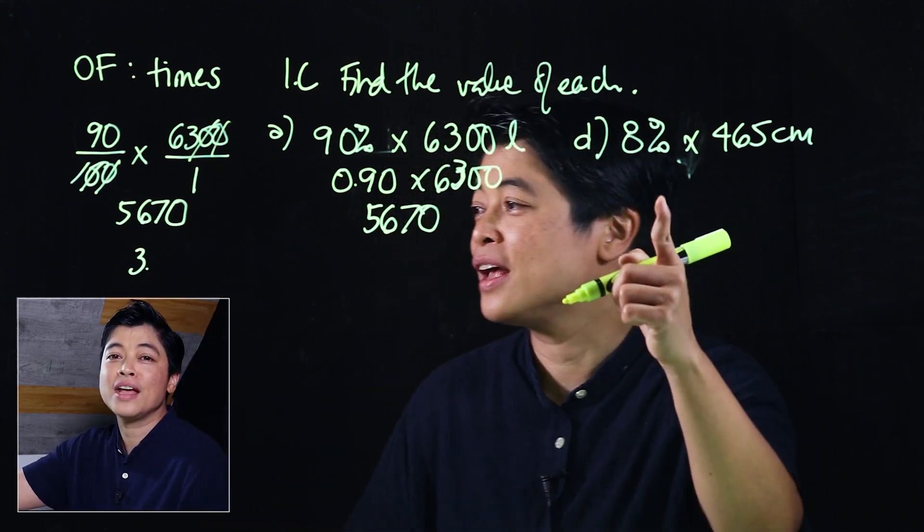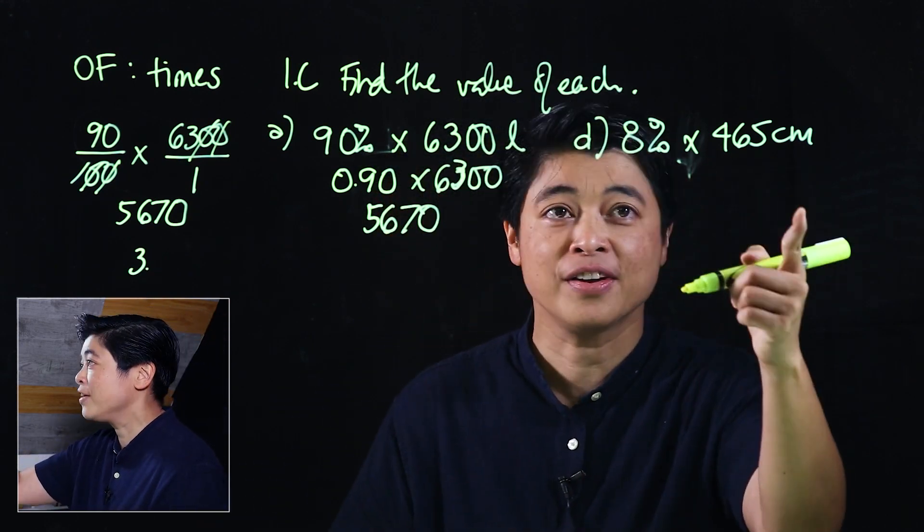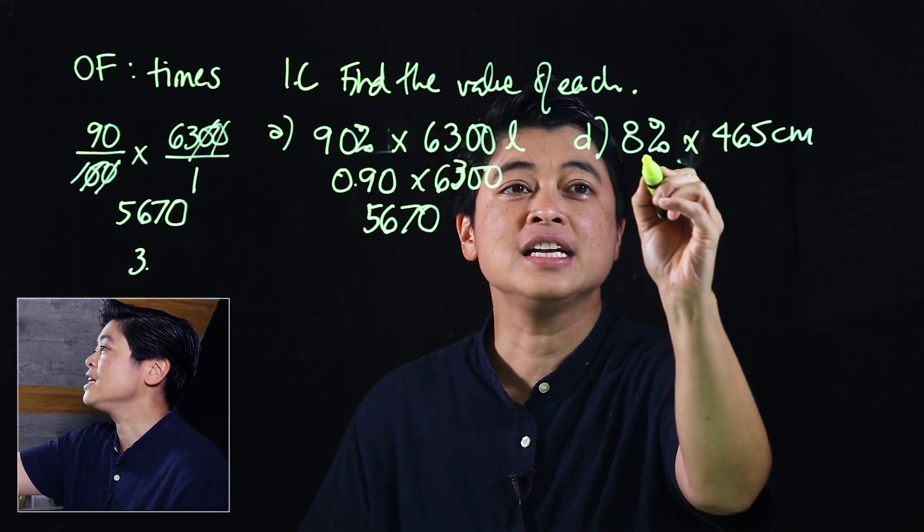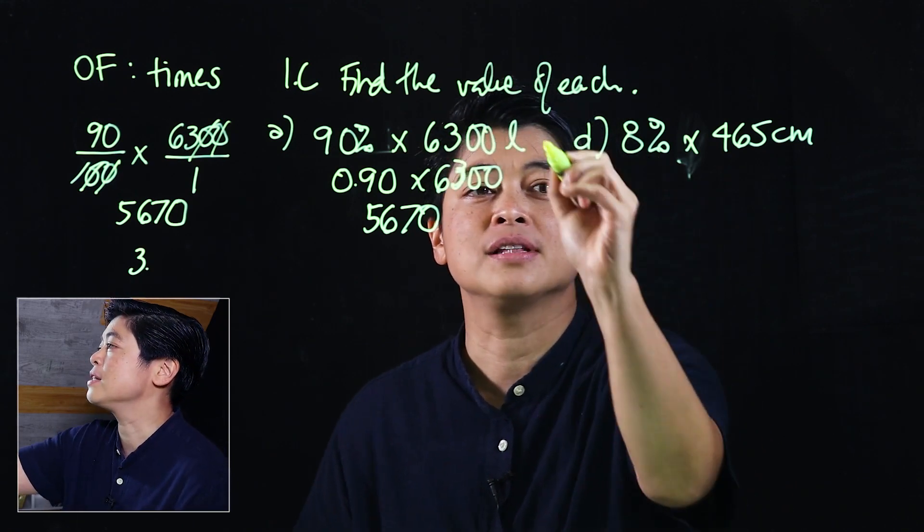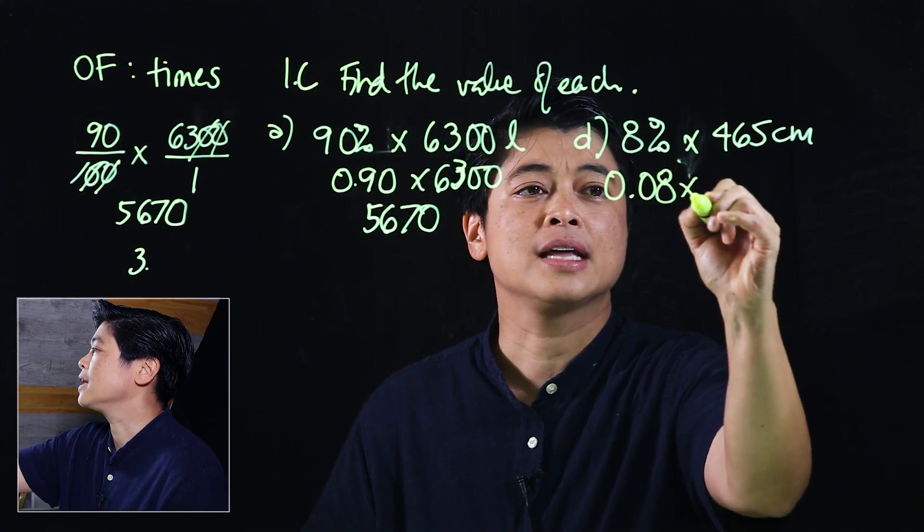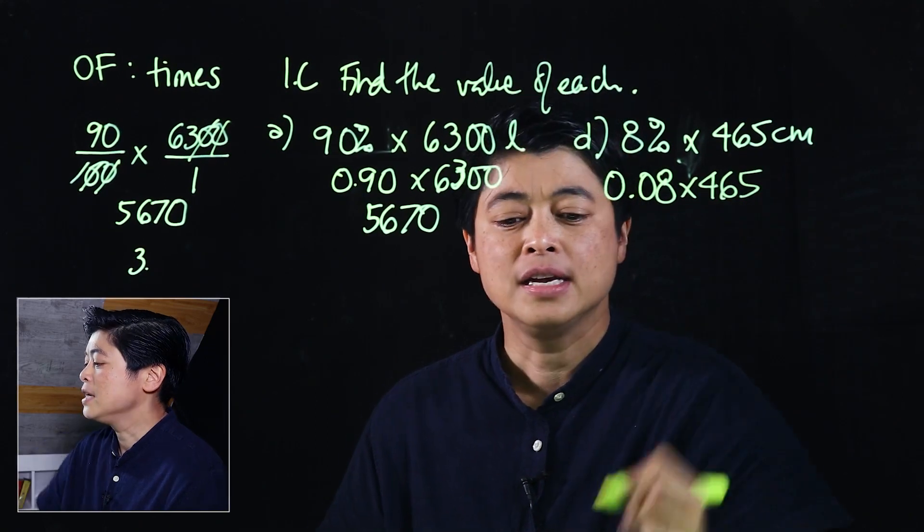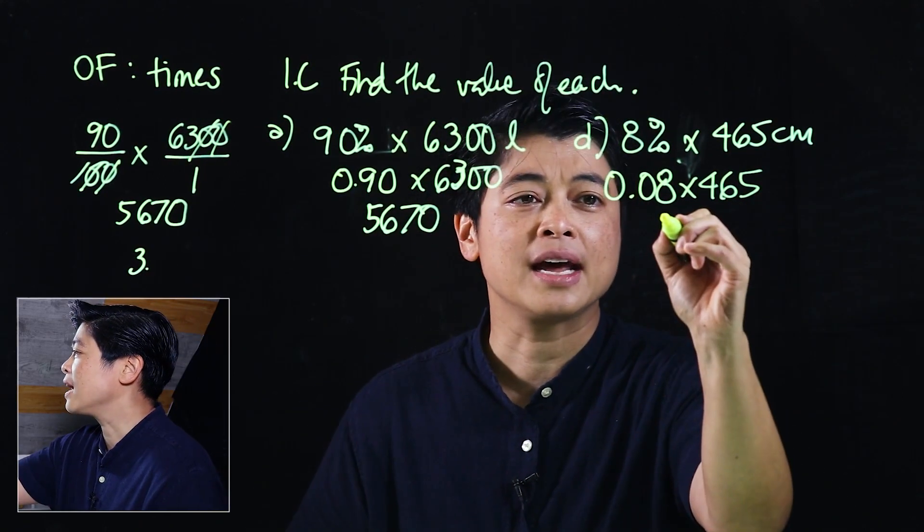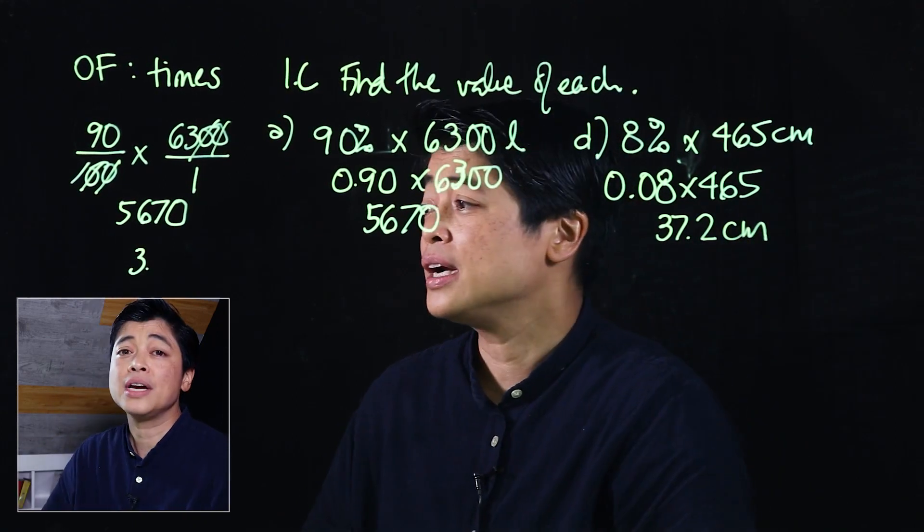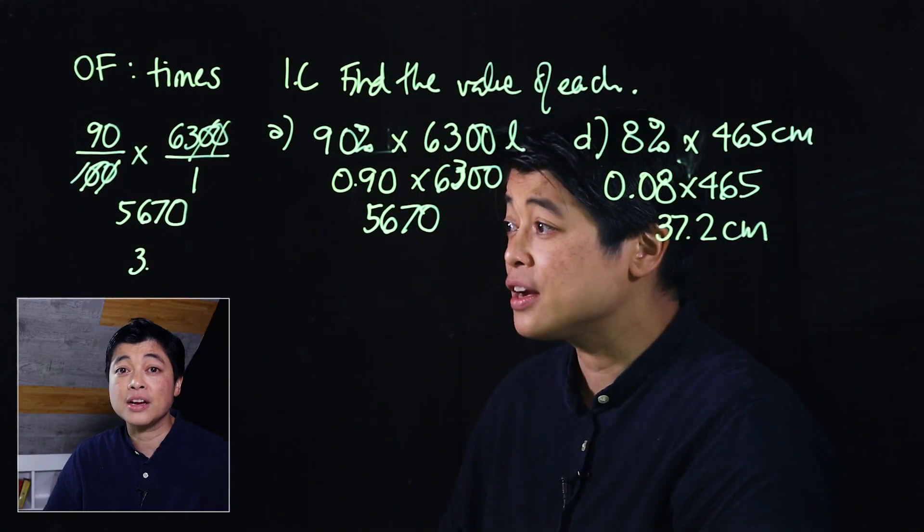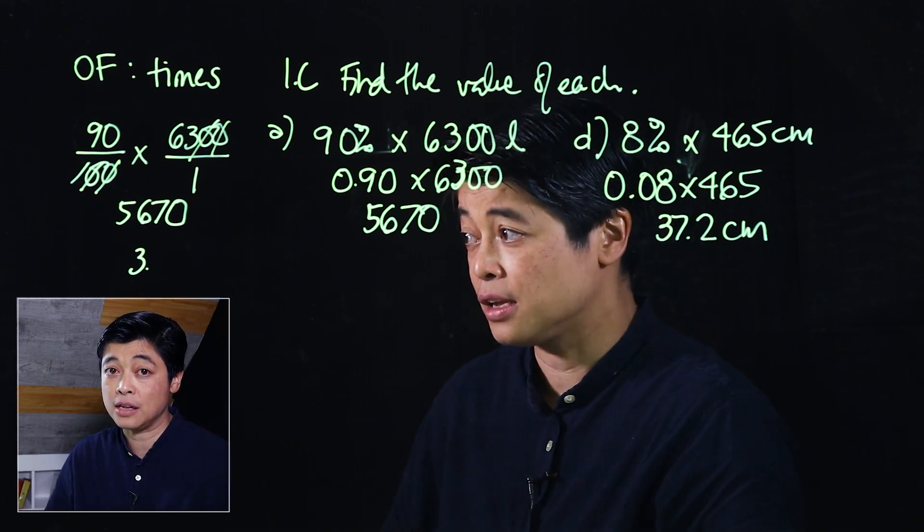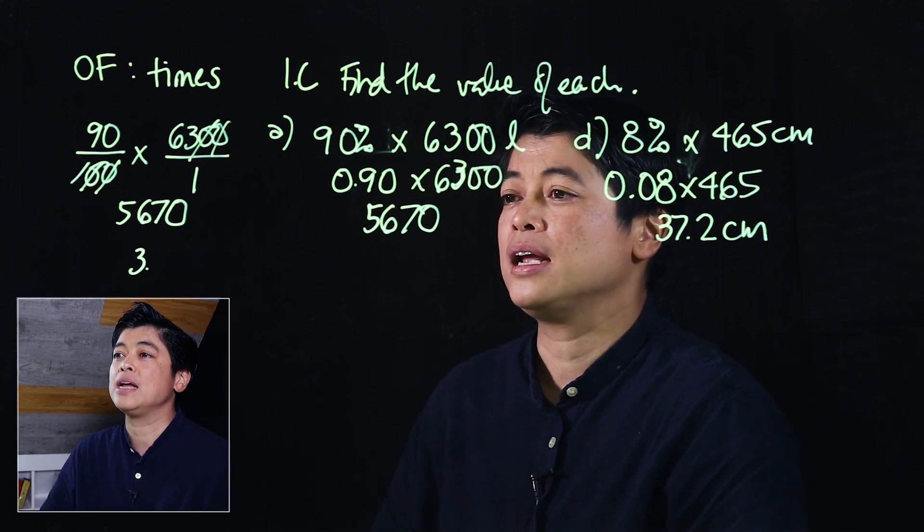So for this one, I will not do mentally because it's too difficult. We'll just do the calculator work. So move the decimal two places to the left makes it 0.08 times 465. When we multiply that out, we should get 37.2 centimeters. Just put it in your calculator as a decimal, not a fraction, because calculator is easier to type a decimal.